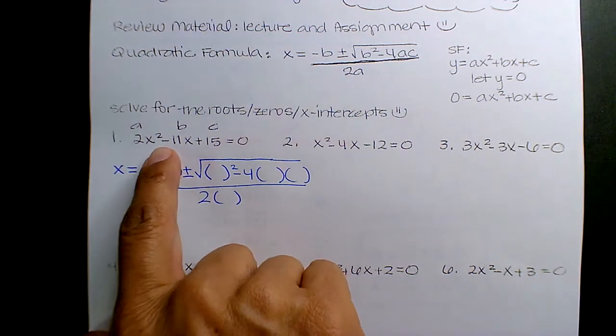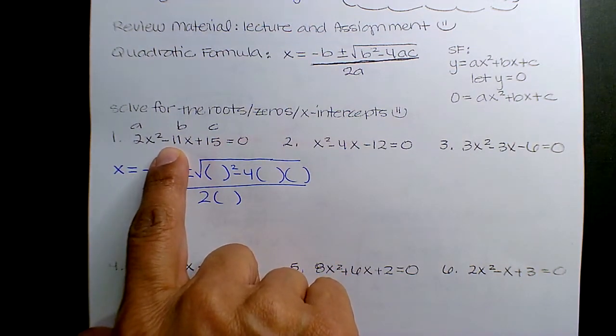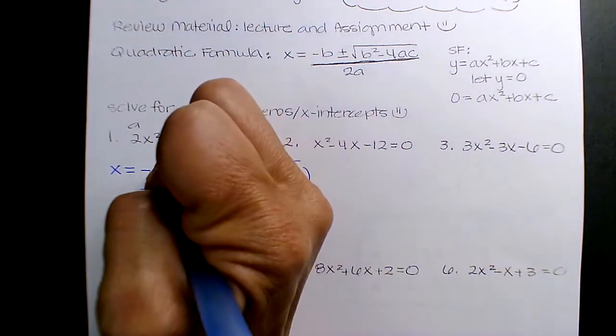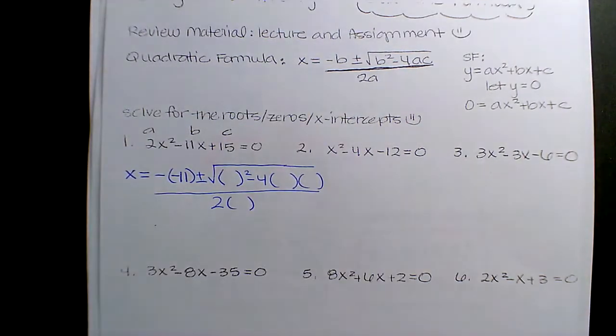So B is negative 11. That means this is negative 11. So that's the first mistake students make, is that because it's minus B and they say the B value is negative, they kind of take it as, 'Oh, B in negative is already there for me.'